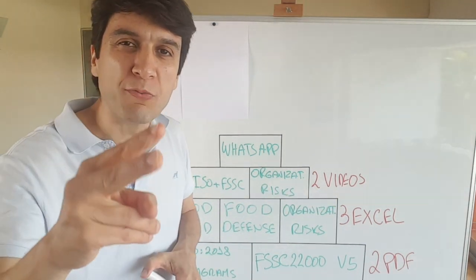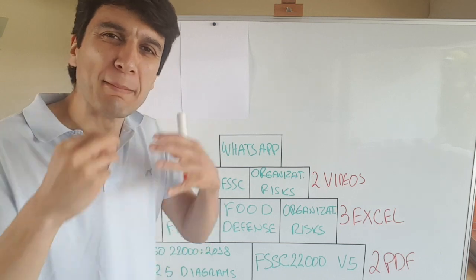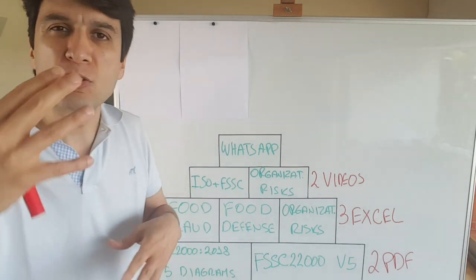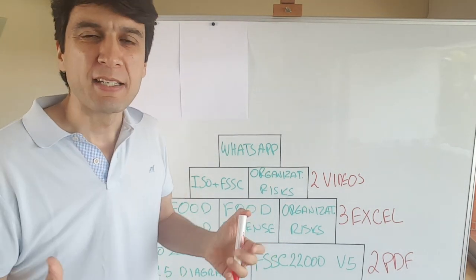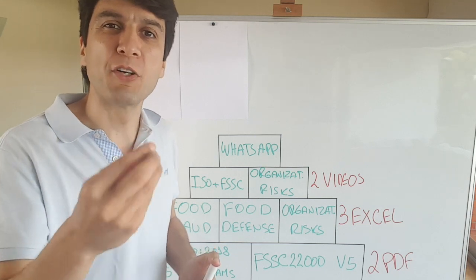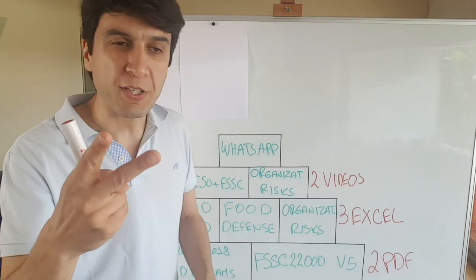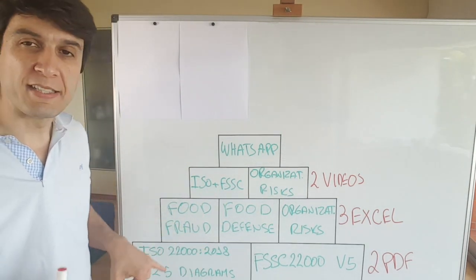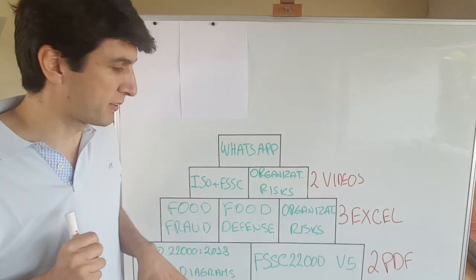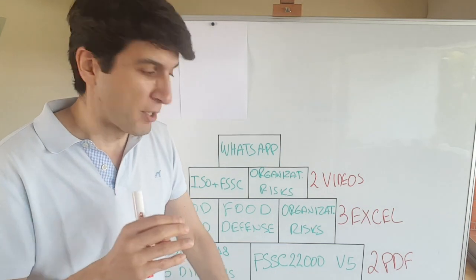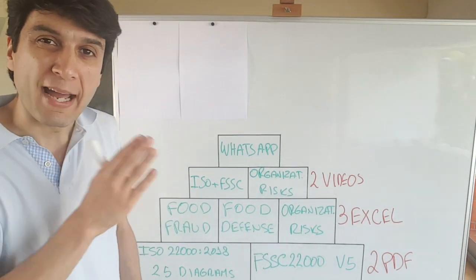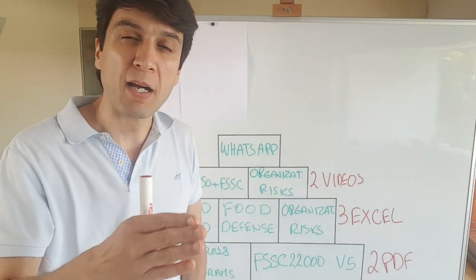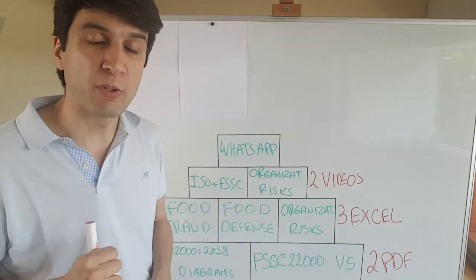Then you have 2 videos. These go deeper. Sometimes when you have the Excel files and the PDFs, nothing helps like a training to address your doubts. So I decided to include 2 videos. One video is from a training I did inside my exclusive group — a 2-hour training where I go through ISO and FSSC. Then you also have a 2-hour video from a workshop I did on how to implement organizational risk.